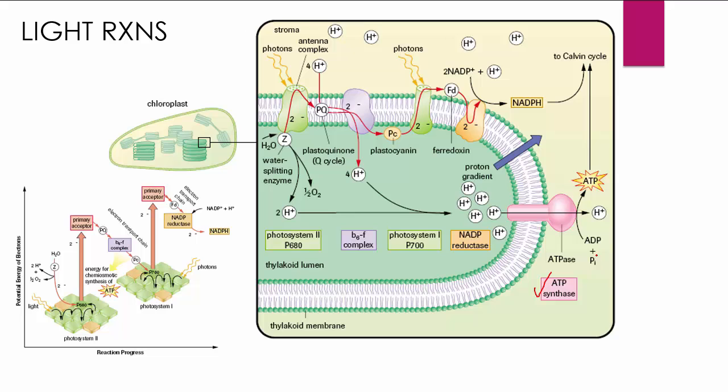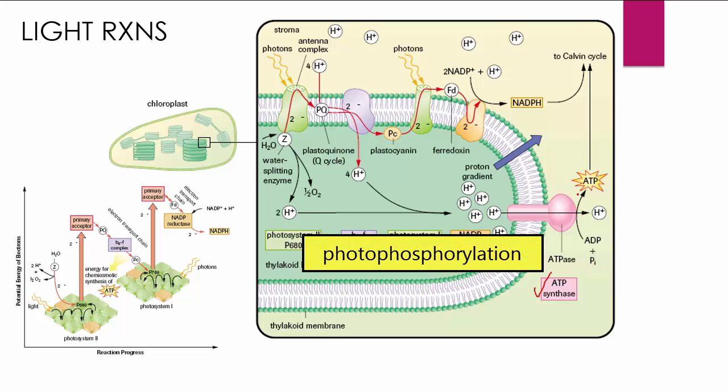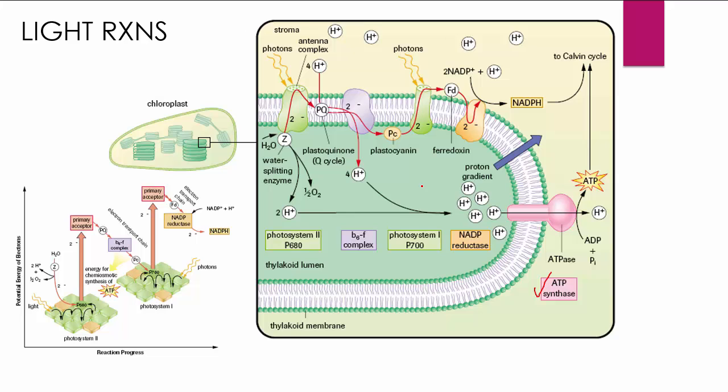So instead, as those hydrogens build up, they start to move down through a hydrogen ion tunnel or pore called the ATPase. And that's associated with an enzyme called ATP synthase. And as the hydrogens move from high concentration inside the thylakoid to low concentration in the stroma, as they do that, they activate the enzyme ATP synthase, which will convert ADP, adenosine diphosphate, and inorganic phosphate, PI, they will come together to create ATP. So it's the movement of the hydrogens through this that cause the production of ATP.